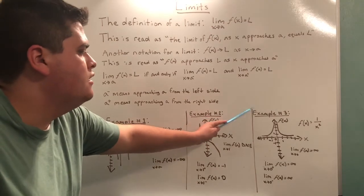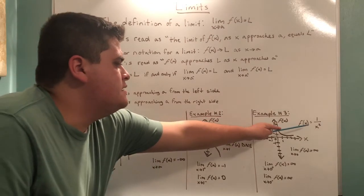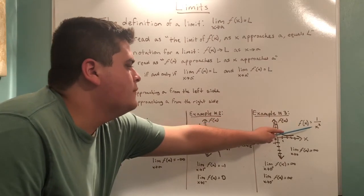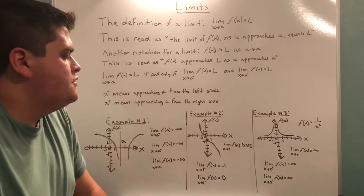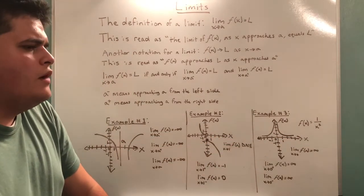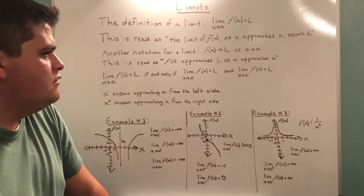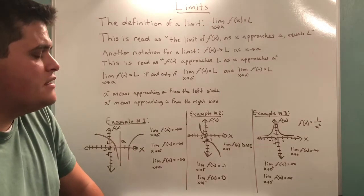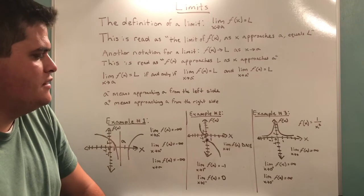For our third example, we have f(x) is equal to 1 over x squared. So, right away, we can assume that the limit equals infinity because we cannot divide by 0.